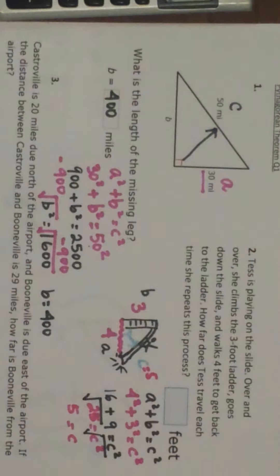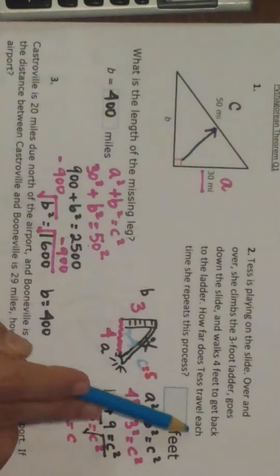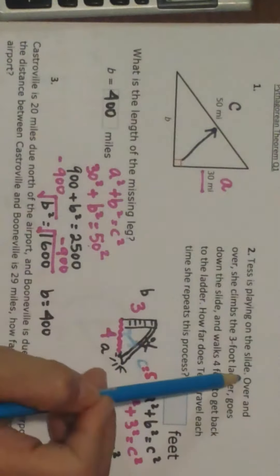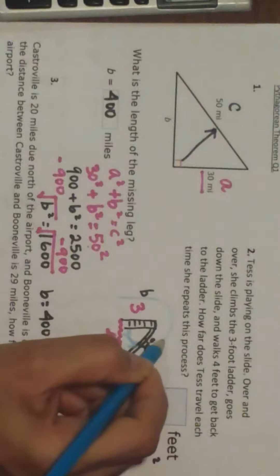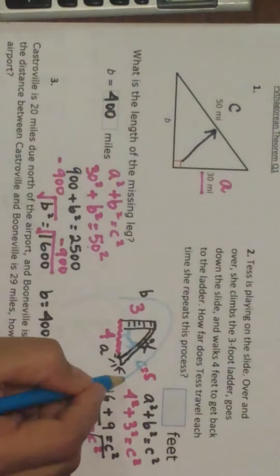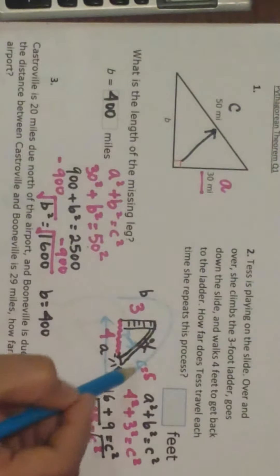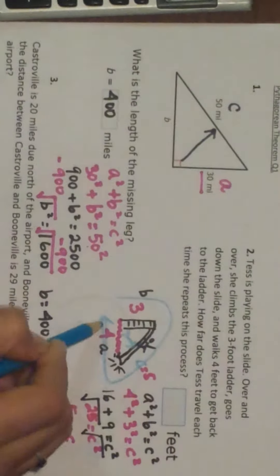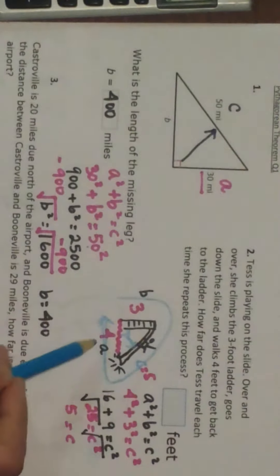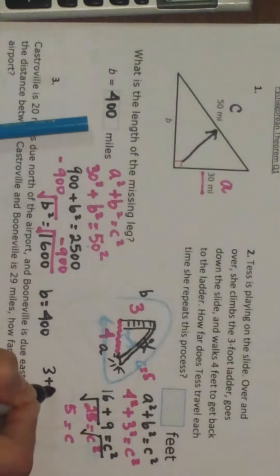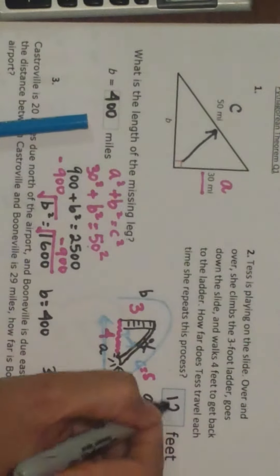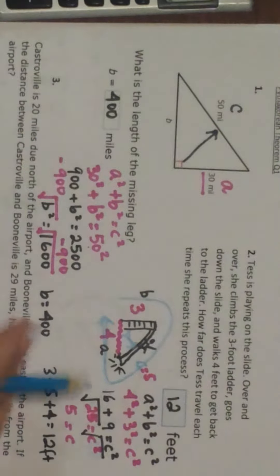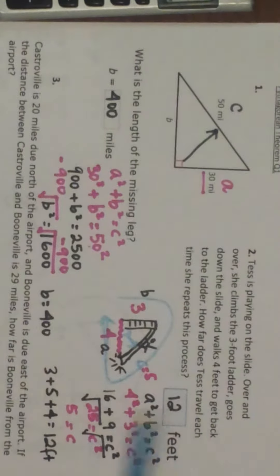Now I reread the question, because on the EOC it's easy to get lost in calculations and not answer what was actually asked. The question is: how far does Tess travel each time she repeats this process? She climbs the three-foot ladder, goes down the five-foot slide, and walks four feet back. So the total is 3 plus 5 plus 4 — that's 12 feet. She travels 12 feet. This is a sample EOC question: find the missing side, then answer the actual question asked.